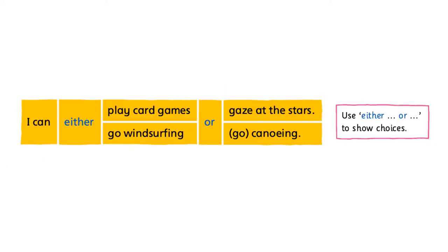Do you remember the use of the connective or? We can use or to list two or more choices. In this unit, we use either or to show only two choices. Unlike the grammar item we learned in Grammar 1 — would rather than — the two choices presented in either or are equally desirable.